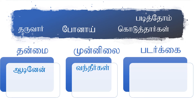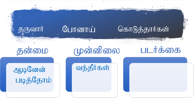Patatom means 'we studied.' The ending Om denotes that the subject is Naam, so it goes under Tanme. Taruvar means 'he or she will give.' The suffix Aar indicates the subject is Avar, so it goes under Patatakai. Purnai means 'you went.' The ending I indicates it is Munnile, and the subject in Purnai is Ni.